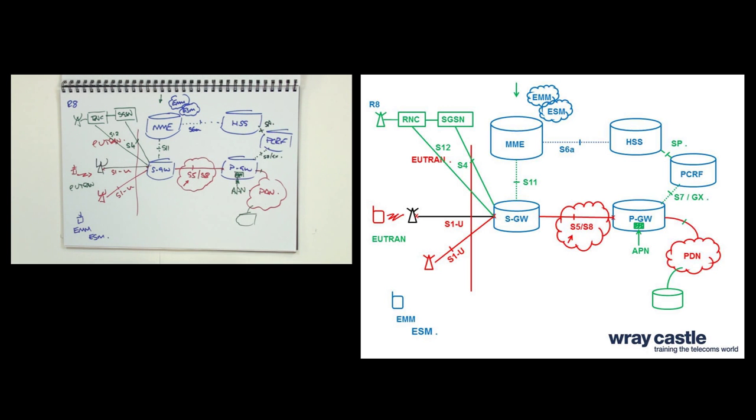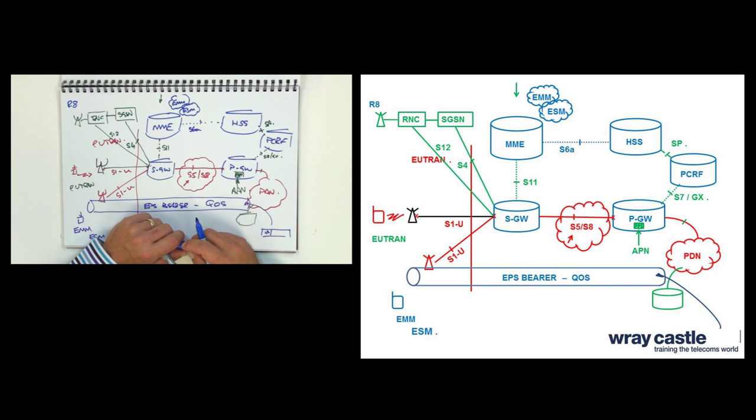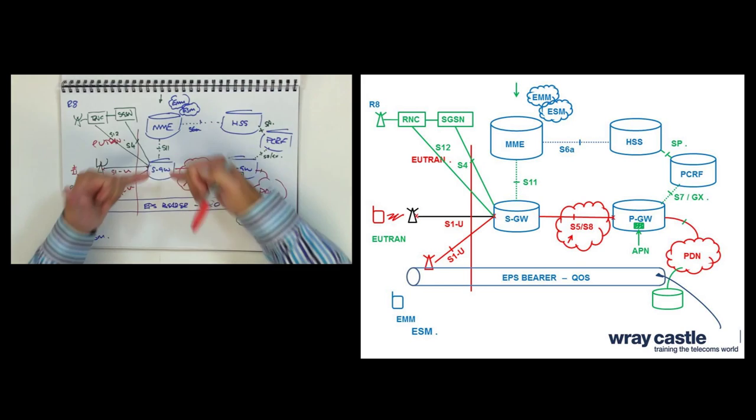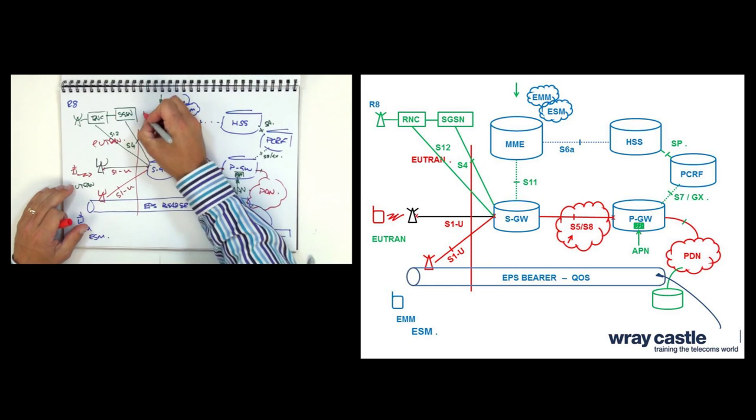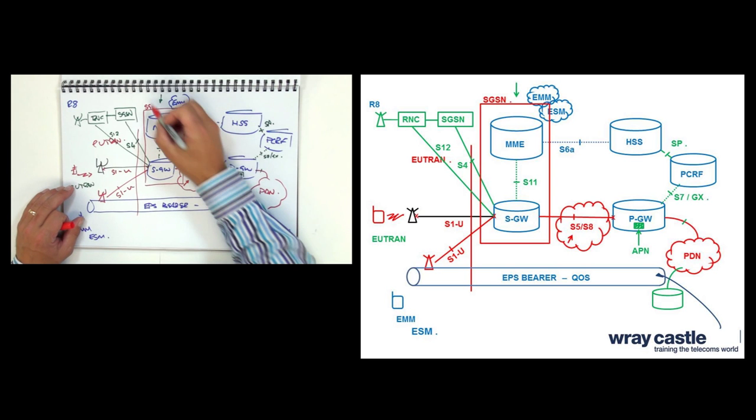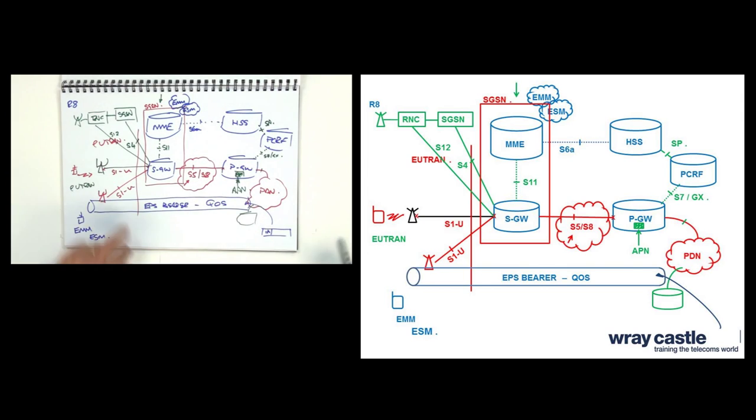And really it's the function of these nodes, specifically the MME, to drive the creation of and to support an EPS bearer which is going to carry IP traffic and support quality of service. Now, if we just take a little step back and look at this, why has it been done this way? I suppose this serving gateway and this mobility management entity, if you were to look at the functions here, these are really in a GPRS network the functions of an SGSN, a serving GPRS support node. And what they've tried to do here is, well, it's really a next generation network concept.